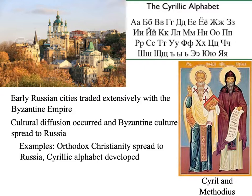Key examples of Byzantine cultural diffusion to Russia: Orthodox Christianity spread to Russia — that's one you definitely need to know. The Byzantines actually sent missionaries. These two, Cyril and Methodius, were missionaries from the Byzantine Empire who went to Russia and taught people about Christianity. Russia didn't have any written language, so they developed a written language called the Cyrillic Alphabet, which is what they still use in Russia today. The point was that they wanted the Russian people to be able to read and write and therefore be able to read the Bible and learn Christianity. A lot of Russian art and architecture looks very similar to the Byzantines because they were heavily influenced.